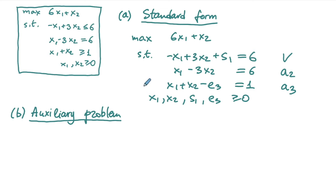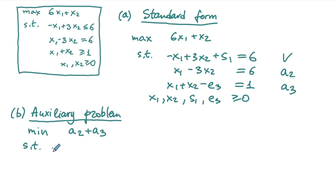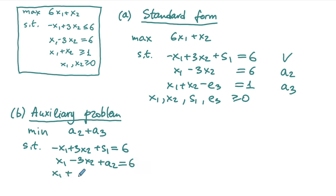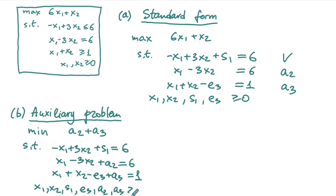Now we set up the auxiliary problem: minimize a2 plus a3, subject to: negative x1 plus 3x2 plus s1 equals 6; x1 minus 3x2 plus a2 equals 6; x1 plus x2 minus e3 plus a3 equals 1. All variables x1, x2, s1, e3, a2, a3 are non-negative.